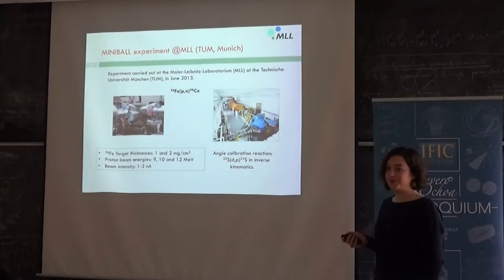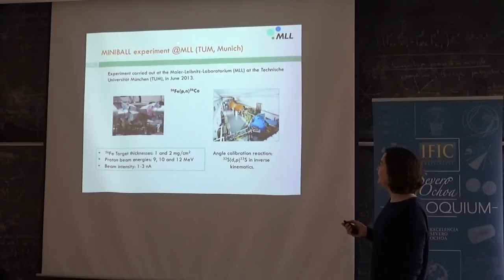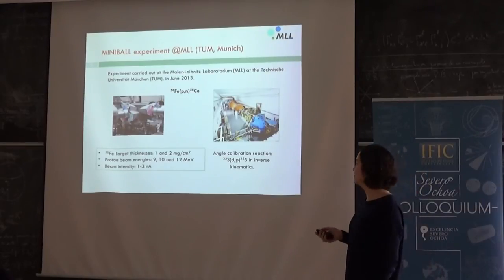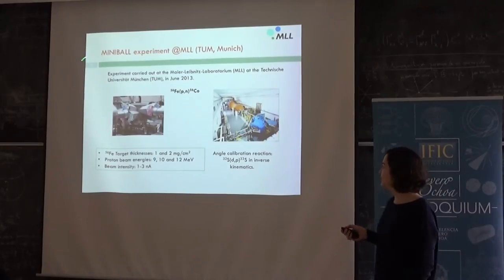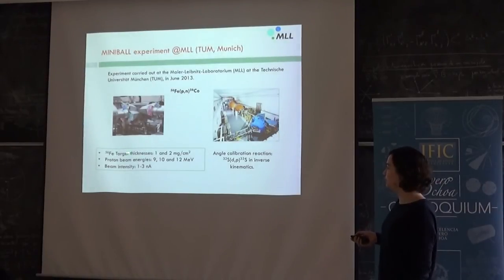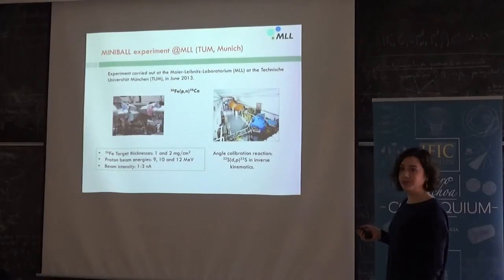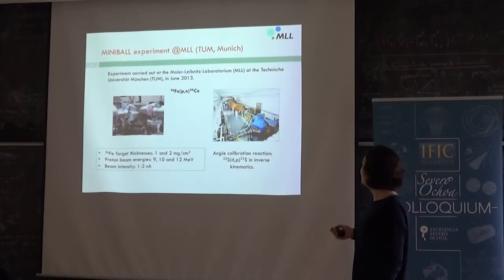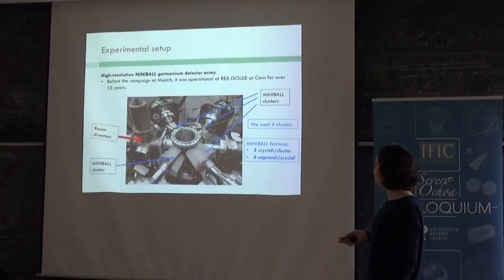So moving now to the experimental part, we performed an experiment at the TUM, this is the Technische Universität München in Munich, with miniballs that I will explain now that are a kind of specific kind of detectors. So we performed the experiment in this laboratory in June 2013 and we did a P,N reaction. So we had a beam of protons, a target of 56-iron. We used two different targets and then different proton beam energies. And then you can see here the accelerator, which is a tandem. Here you accelerate the protons until you reach the energy you need. And then we also had to perform an angle calibration reaction to know in which angle each detector is located.